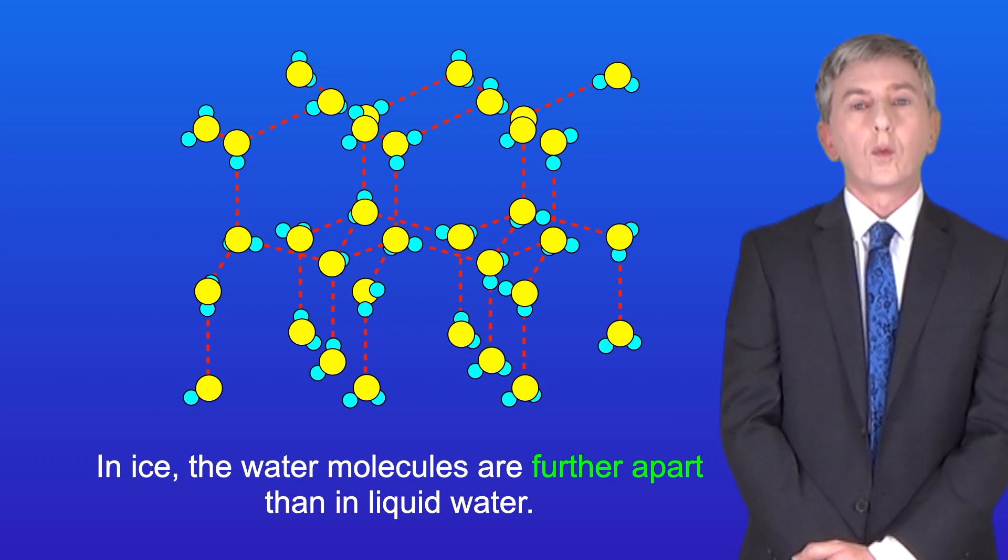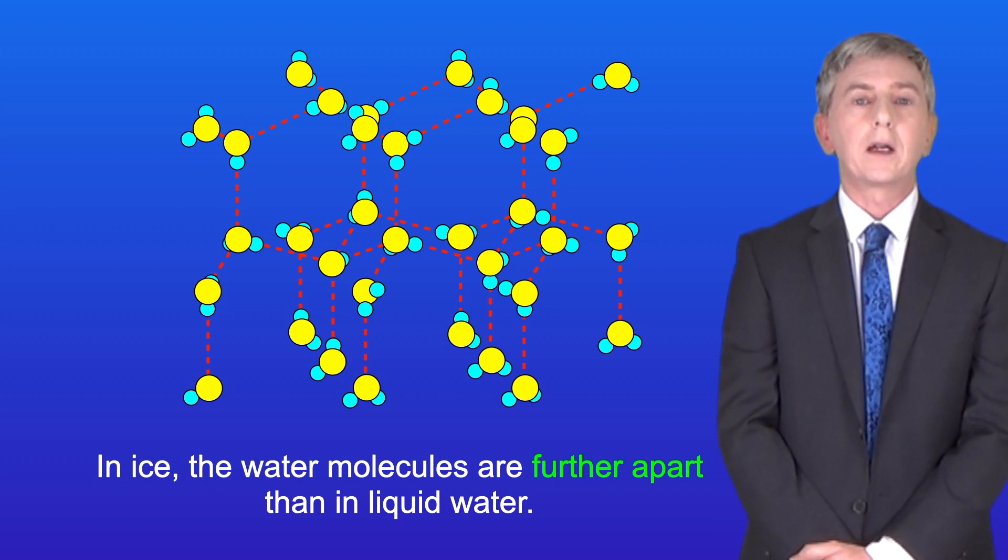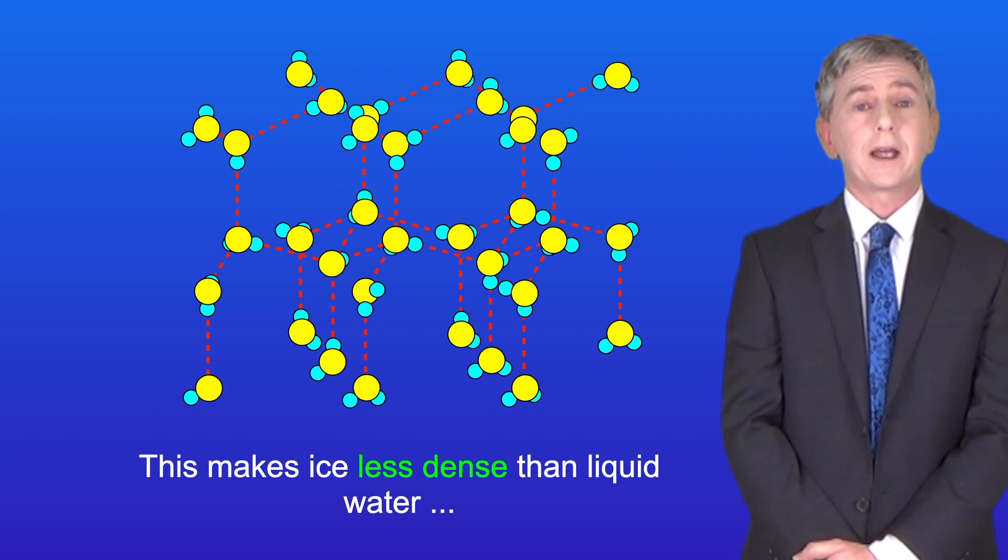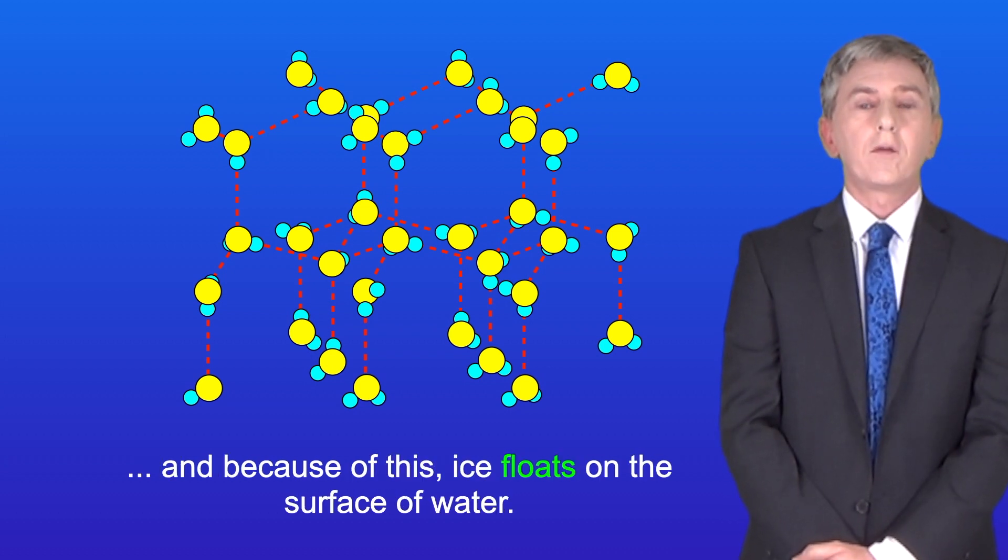In ice, the water molecules are further apart than in liquid water. This makes ice less dense than liquid water, and because of this, ice floats on the surface of water.